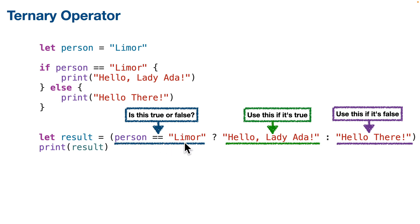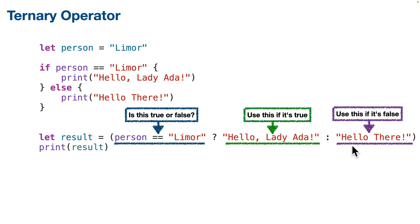The ternary operator has those same three parts. First you write a boolean statement — it must return true or false. Then there's a question mark followed by what to return if the boolean is true. Then there's a colon followed by what to return if the boolean is false. So we create a constant 'result' containing the result of the ternary operator inside parentheses. Between the parentheses: first check person == 'lemore', then question mark and if true return 'hello lady ada', then colon and if false return 'hello there.' Whatever we get, we put it in result, and the line below just prints result.